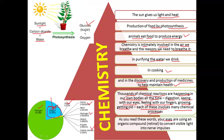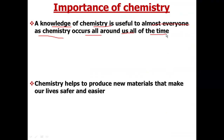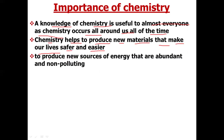As you read these words, your eyes are using an organic compound called retinal to convert visible light into nerve impulses, which is responsible for our ability to see. So chemistry is everywhere — wherever there is matter, there is chemistry. Knowledge of chemistry is useful to almost everyone, and chemistry helps us to produce new materials that make our lives safer and easier.